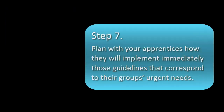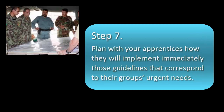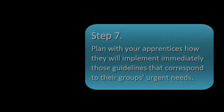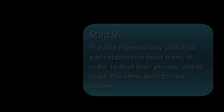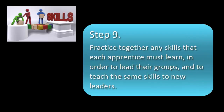Step 7: Plan with your apprentices how they will implement immediately those guidelines that correspond to their group's urgent needs. Step 8: Assign to each apprentice those resource documents that will best help him implement his agreed plan. Step 9: Practice together any skills that each apprentice must learn in order to lead their groups and to teach the same skills to new leaders.